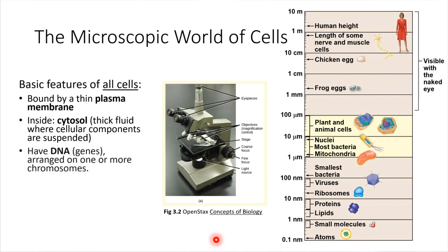Two more things that all cells have: they all have DNA, they all have nucleic acids, and those nucleic acids allow the cell to store information in the form of genes.